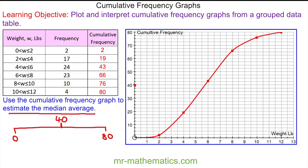To estimate the median, we're going to draw a line horizontal from 40 to our curve, and then down from our curve to the weight axis. So you can see that the median weight is approximately 5.5 pounds.